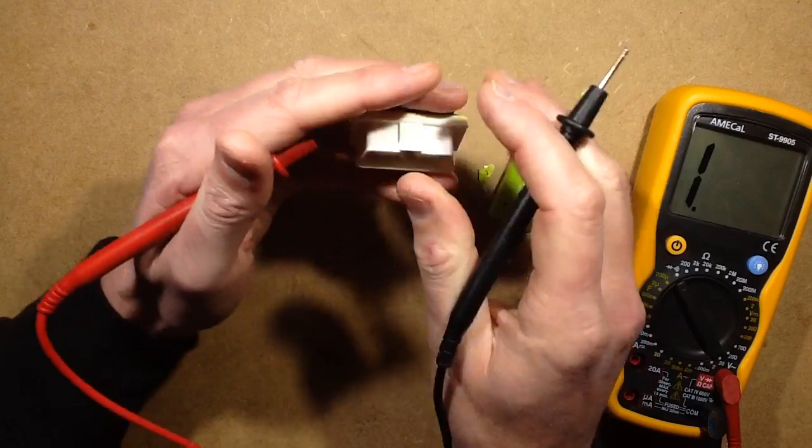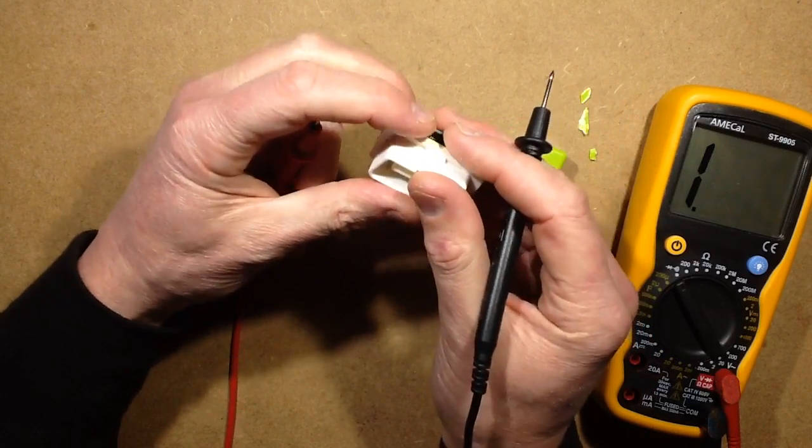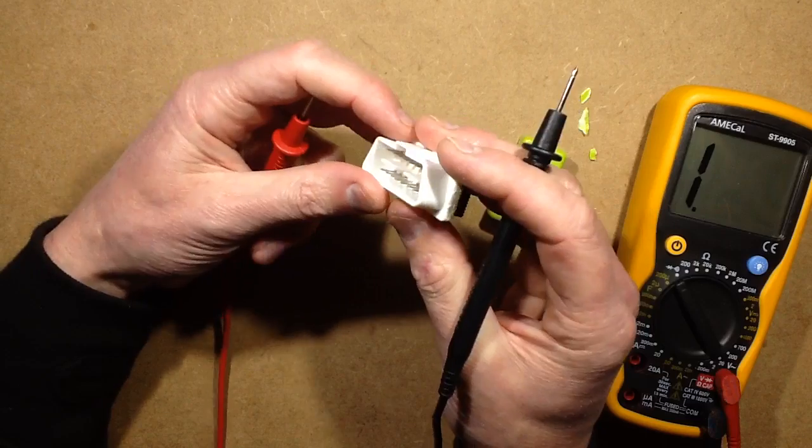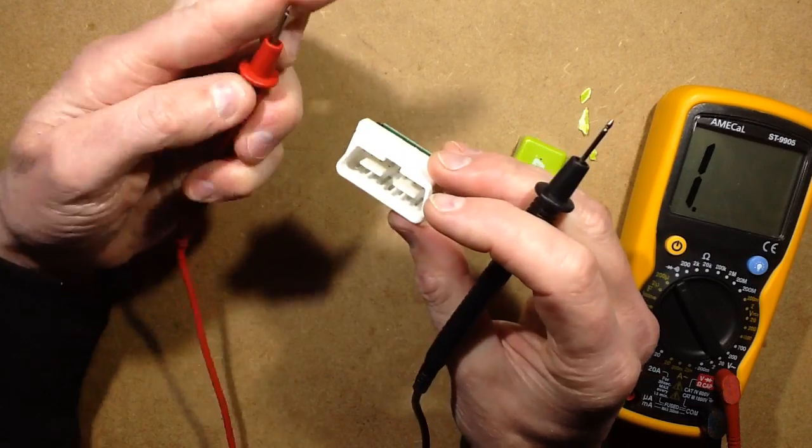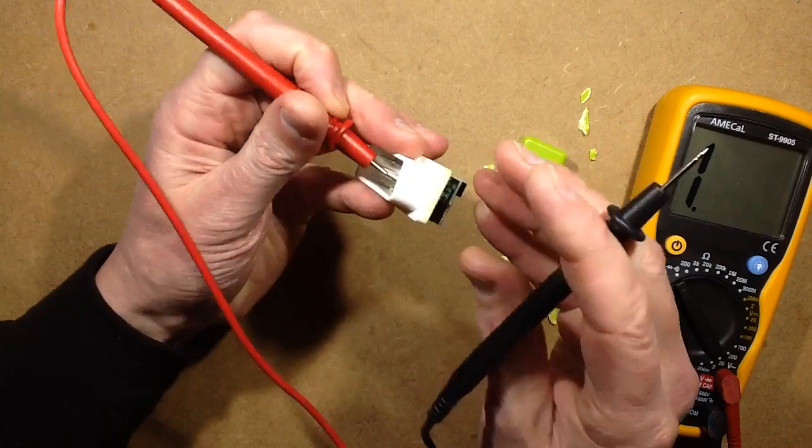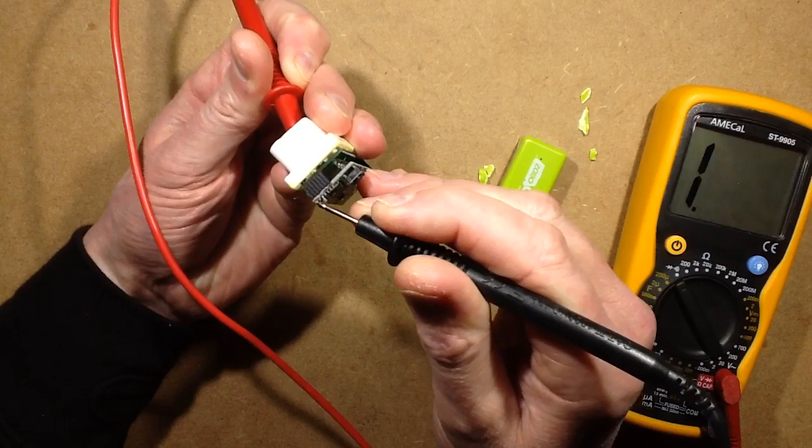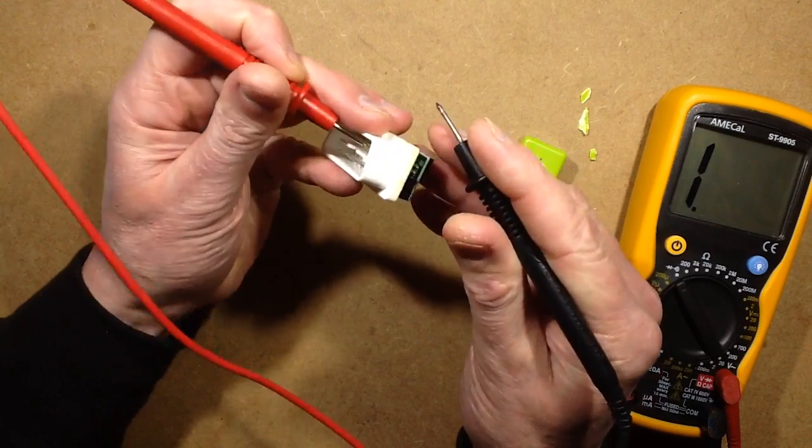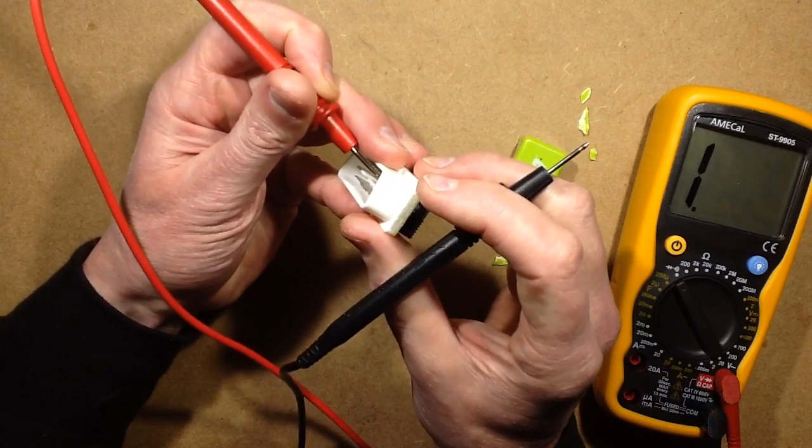What about the data? So we've got the CANBUS on pin 6 and 14, which would be here. Oh, we've got data coming up through from the CANBUS.